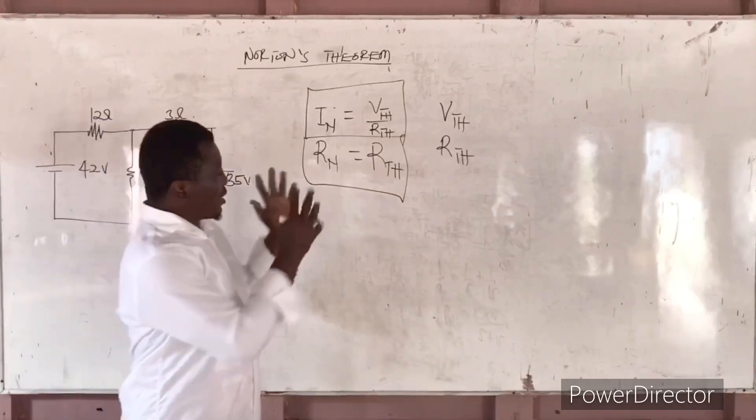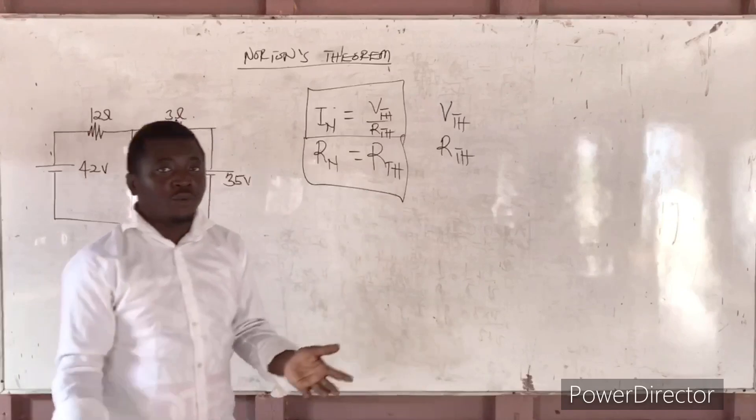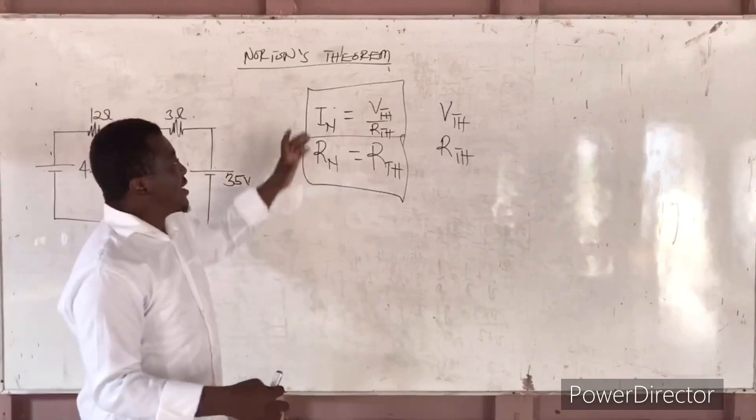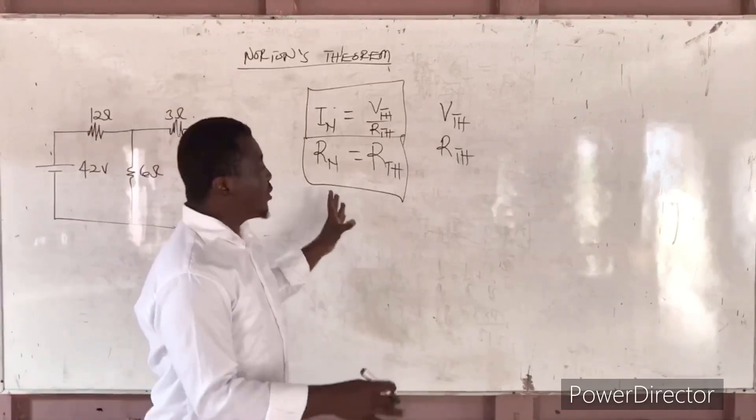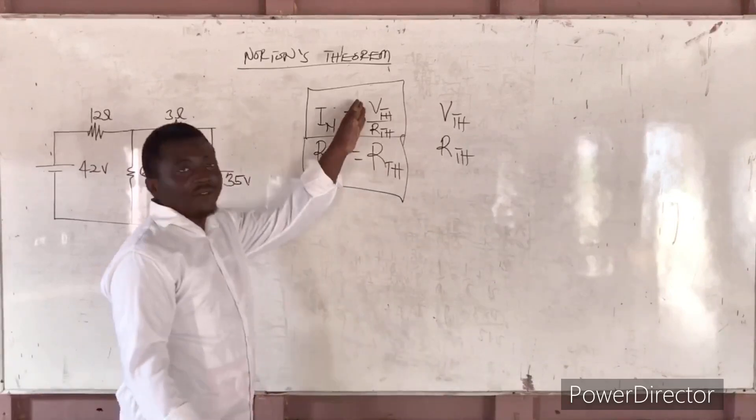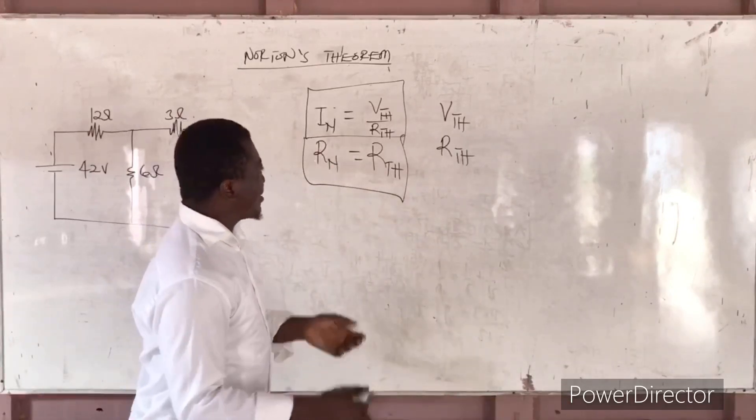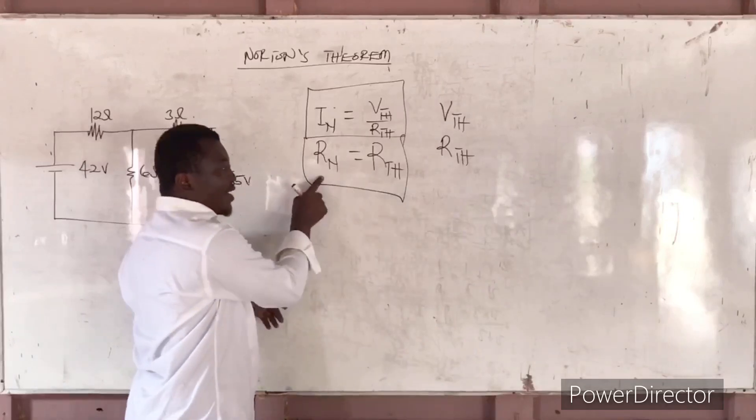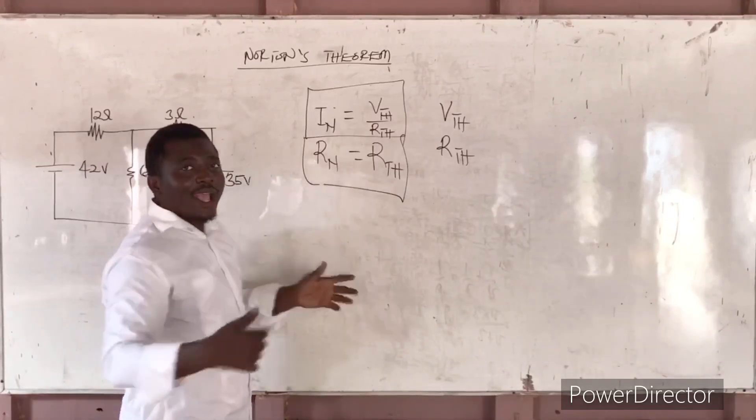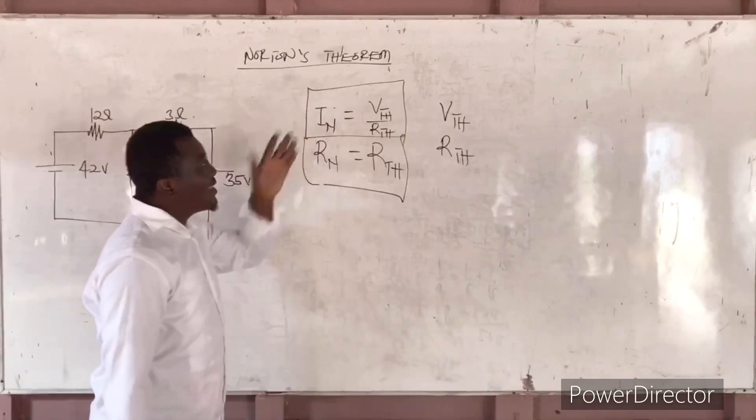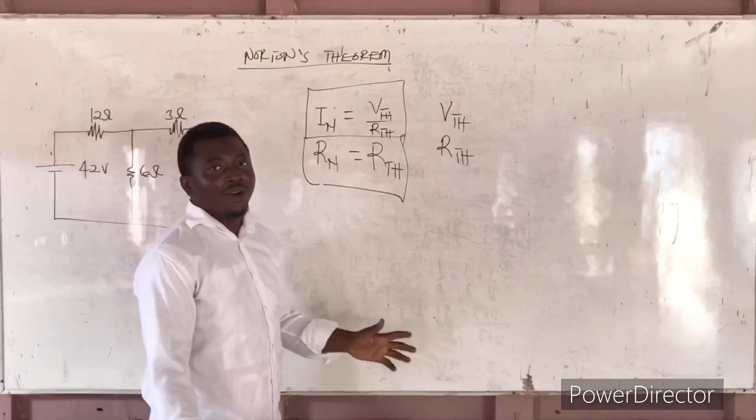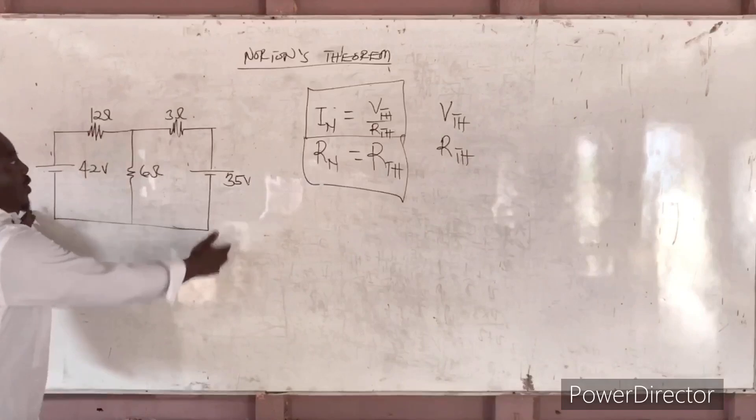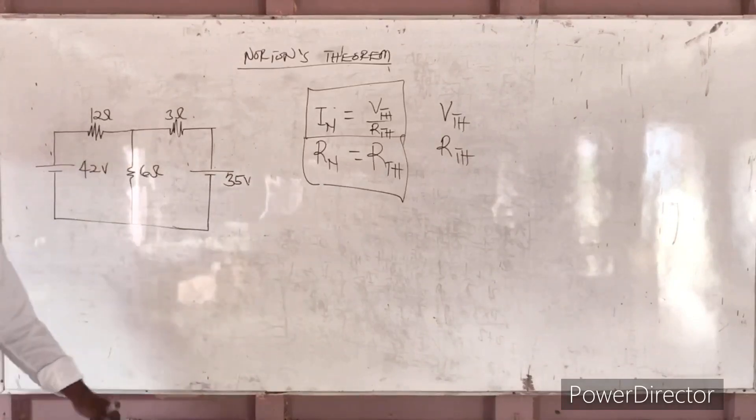There is the normal Norton procedure in doing it, that's when you go through Kirchhoff. And there is the Thevenin approach in tackling Norton's theory. That is what our class will be based on. So we are going to first find Thevenin voltage and Thevenin resistance. If you get those two indirectly, you have gotten Norton's resistance. And if you get Norton's resistance you can easily get Norton's current, and Norton's current is given by VTH over RTH. So we are going to solve this question using the principle I have given to you right now. So let's go.